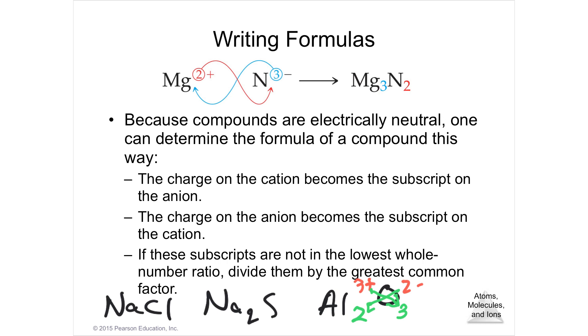And these subscripts are not in the lowest whole number ratio, or if they're not, then you need to divide them by the greatest common factor because you have the smallest number of ratio in a formula. You can have a molecular formula like C6H12O6, but its empirical formula would be CH2O. We talked about that before.